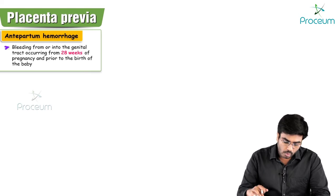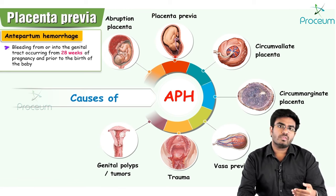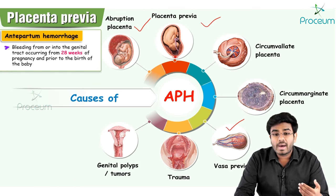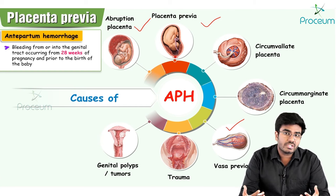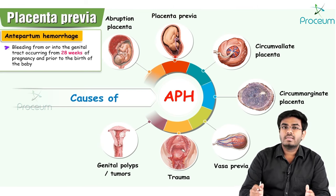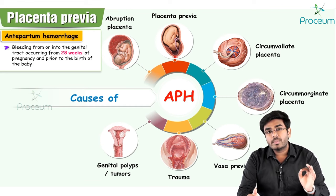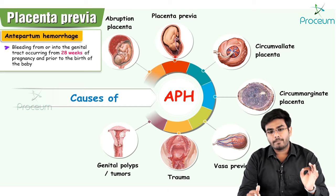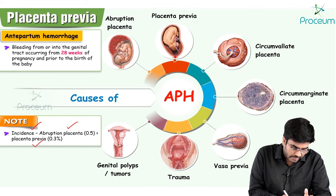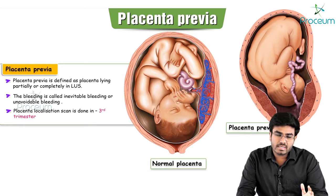The most important causes of antepartum hemorrhage are abruptio placenta and placenta previa. The most common cause is abruptio placenta, followed by placenta previa. Other causes include vasa previa, circumvallate placenta, circummarginate placenta, trauma, genital lacerations, and genital polyps. The incidence of abruptio placenta is 0.5%, which is greater than placenta previa at 0.3%.